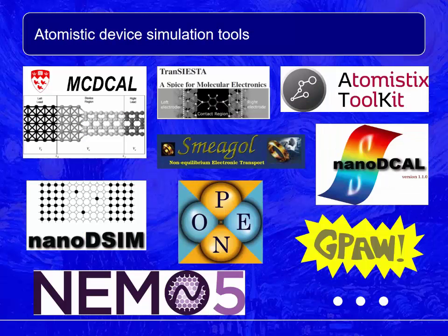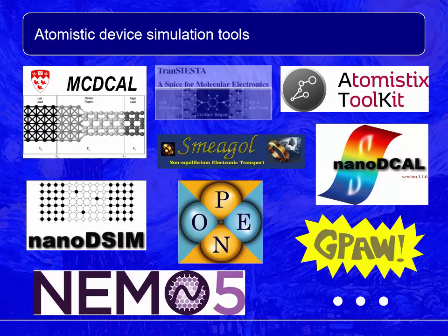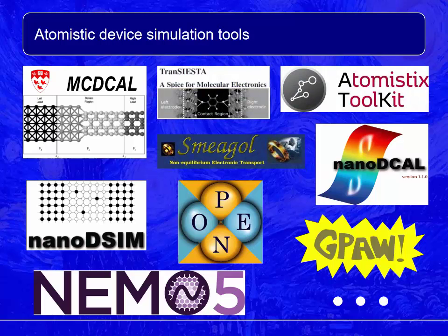In recent decades, several device simulation tools using the bottom-up approach have been developed in universities and software companies. These include McDCal, TransIESTA, Atomistix Toolkit, Smeagol, NanoDCIM, OpenMX, GPAW, NEMO5, and many others. These software tools are capable of predicting electric current flowing through a nanostructure. Essentially, the input is the atomic coordinates and the output is the electric current. The software tools have been applied extensively to study emerging electronic materials and devices.